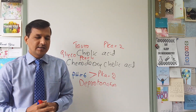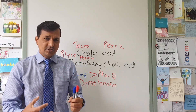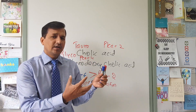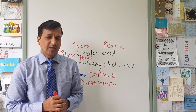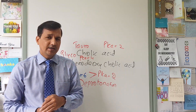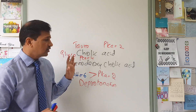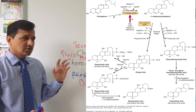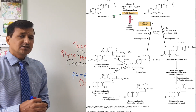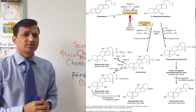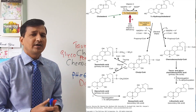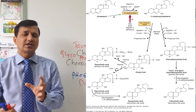Once primary bile acids participate in emulsification and lipid digestion and absorption, they move from the duodenum through the jejunum into the terminal part of the ileum. Bacteria present in the intestine deconjugate glycine and taurine from the primary bile acids and cause 7-alpha dehydroxylation. This bacterial-mediated deconjugation and 7-alpha dehydroxylation converts primary bile acids into secondary bile acids.